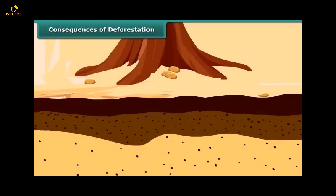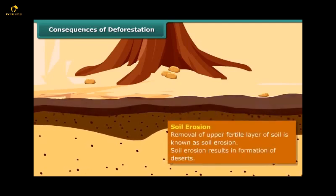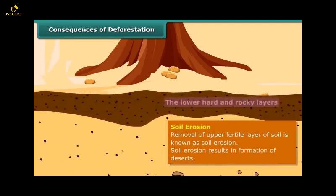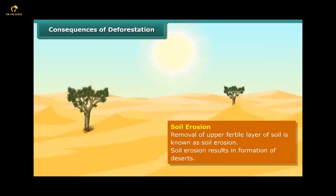Fewer trees also result in more soil erosion. Removal of the top layers of soil exposes the lower hard and rocky layers, which have less humus and are less fertile. Gradually, fertile land gets converted into deserts — this is called desertification.